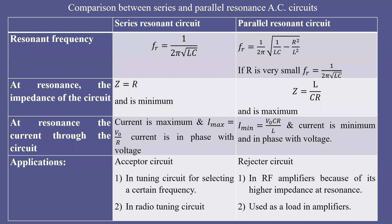We have completed the discussion of series resonant circuit and parallel resonant circuit in the previous classes. Today we will take the comparison between the two. A series resonant circuit is an AC circuit containing R, L, and C in series, whereas a parallel resonant circuit contains a resistance and inductor connected in series, and that combination is connected in parallel with the capacitor C.